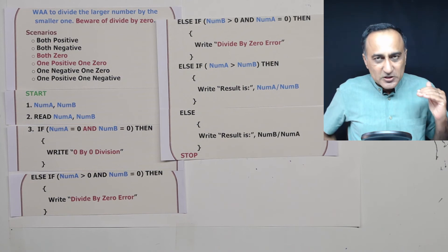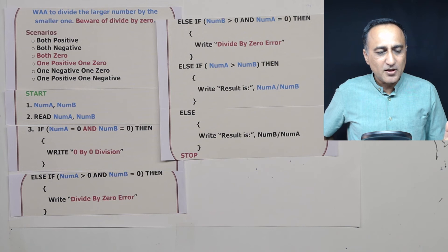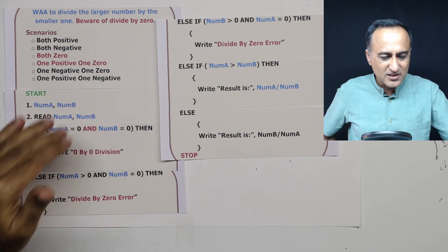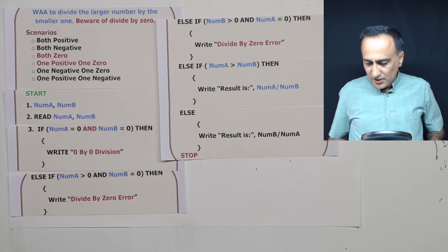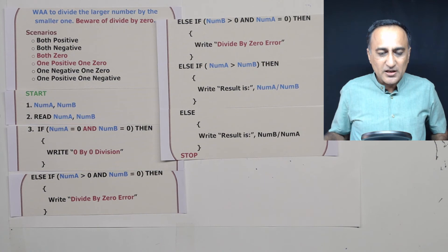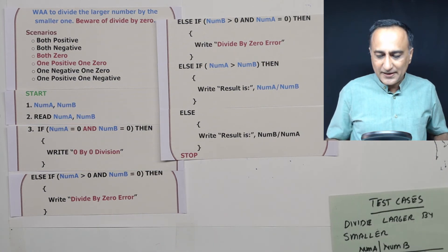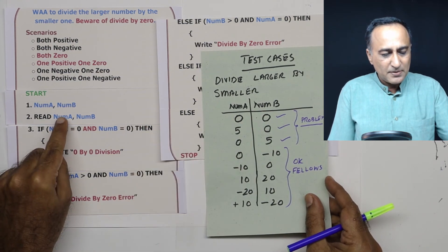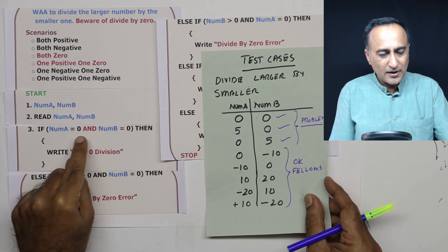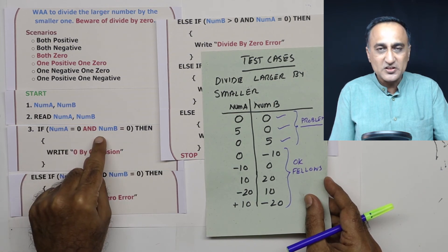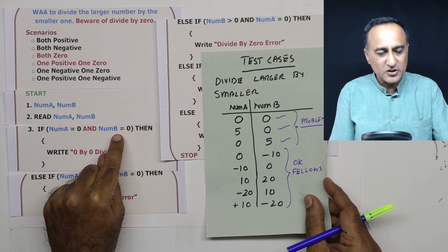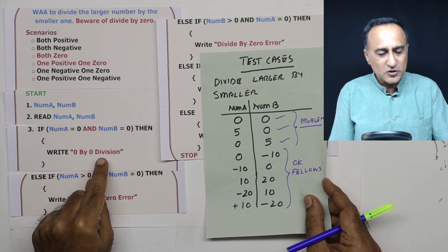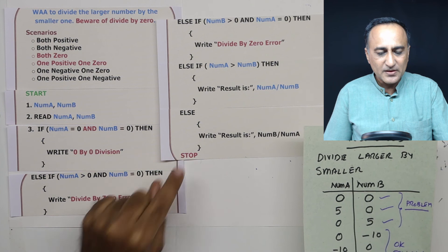So if you take a look at this particular logic it will deal with every possible situation: both positive, both negative, both zeros, one positive one zero. All those cases it will comfortably deal. But we don't trust our logic until we have run through the data. So first what we will do is we will take 0 and 0. Number A is 0, number B is 0. Both are 0 and condition says both are 0. Number A is 0 and number B is 0. I am going to write 0 by 0 division and then I am going to come here and stop.